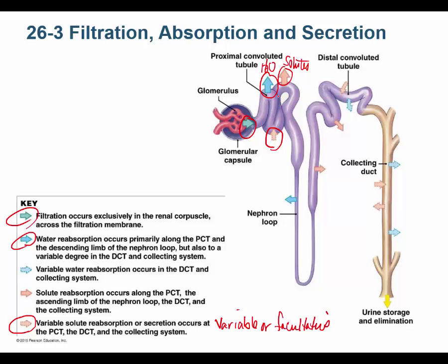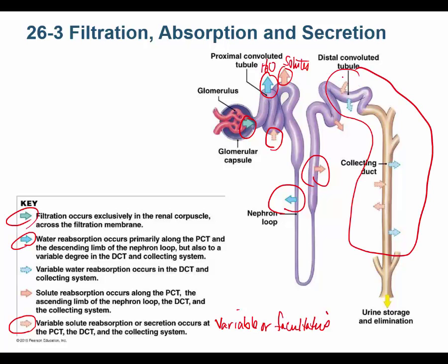Most of the proximal convoluted tubule reabsorption is obligatory. The descending limb of the loop of Henle has obligatory water reabsorption; the ascending limb has obligatory solute reabsorption. The distal convoluted tubule and collecting ducts show all dotted arrows — facultative reabsorption and secretion under hormonal control, specifically ADH and aldosterone.